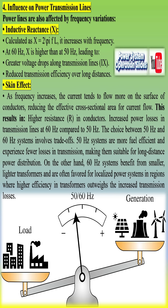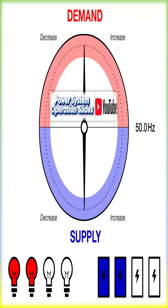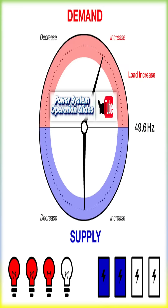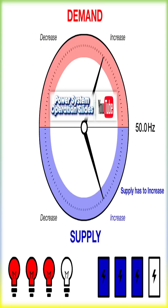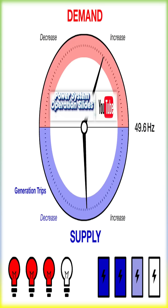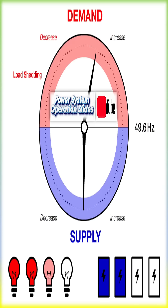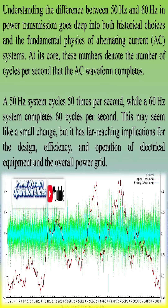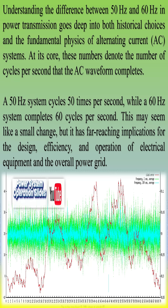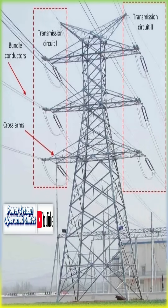Transformers, essential for stepping up and down voltages in power transmission, are significantly influenced by frequency. Eddy current losses are proportional to the square of the frequency, while hysteresis losses are directly proportional to the frequency F. At 60 Hz, these losses are greater, resulting in increased heat generation in the transformer's core and reduced overall efficiency compared to 50 Hz systems.